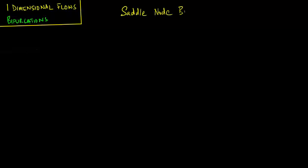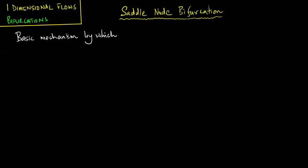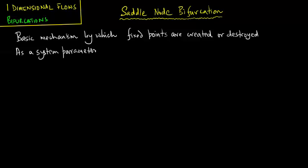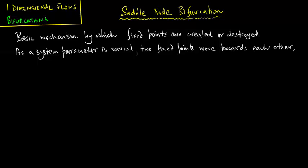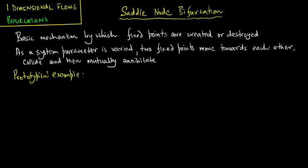The first bifurcation is a saddle-node bifurcation. This is the basic mechanism by which fixed points are either created or destroyed — essentially, as a system parameter is varied, the two fixed points move towards each other, collide, and then mutually annihilate. The prototypical example is x-dot equals r plus x-squared, where r is a parameter.